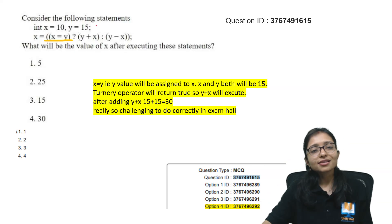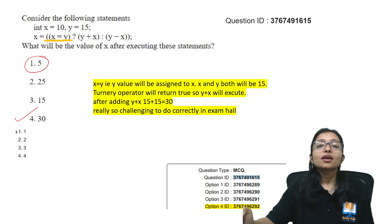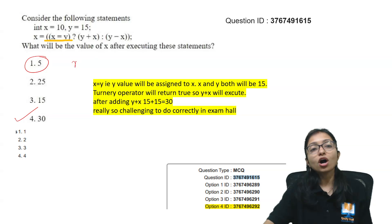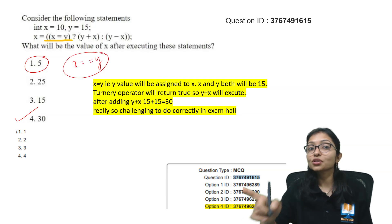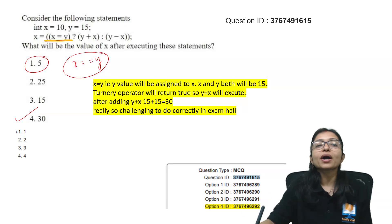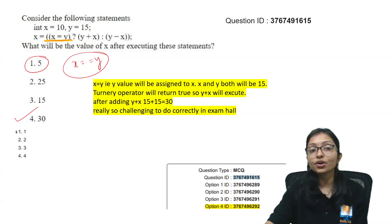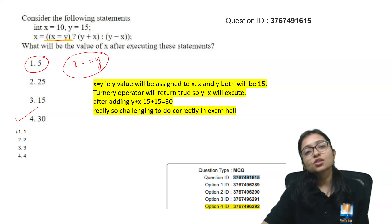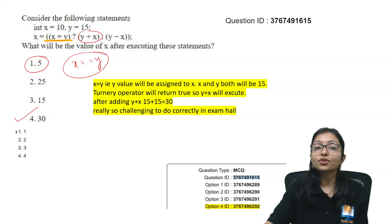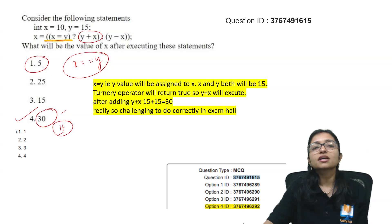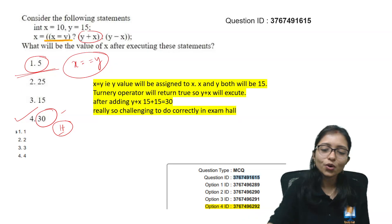In this question, the maximum students marked option 5 but option 4 is the correct answer. What happened is maximum students thought it was x == y, but it is not x == y — it is x = y, which actually assigns the value of y to x. That's why x becomes 15, and ultimately the ternary operator gives true, executing y + x which is 15 + 15 = 30. That's why the answer is 30. Only one student did it correctly and 99 students made the mistake.